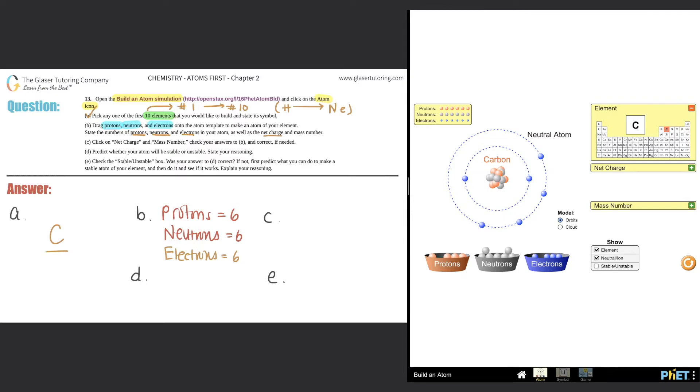They say state the number of protons, which we did—we put in 6. State the number of neutrons—we put in 6. State the number of electrons—we put in 6. As well as the net charge and mass number. Remember from questions 12 and 11, we should know how to find the net charge. The net charge or overall charge is always the number of protons minus the number of electrons. Here I have 6 protons and 6 electrons, so 6 minus 6 is 0. My net charge is 0, and you can see that in the diagram—it says neutral atom.